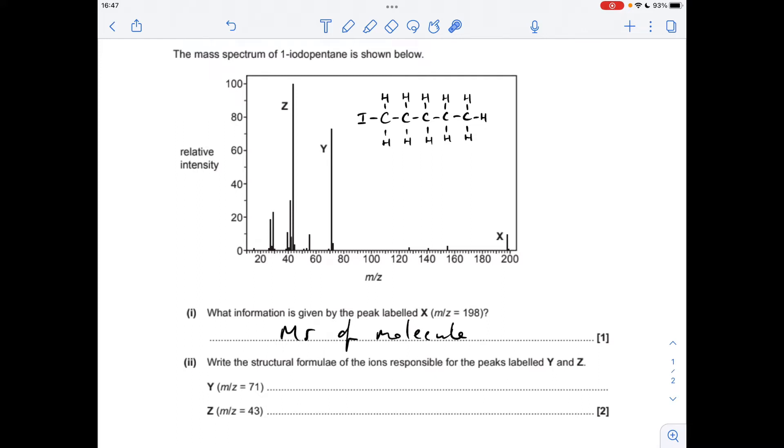Moving on to the next part, we've got to come up with a structural formula for the ions responsible for these two peaks, Y and Z. So we'll do Y first. If we think about the drop in mass to go from 198 to 71, that's a loss of 127, which equates to the loss of the iodine. So this bond must have broken, and this with a positive charge on must be responsible for the fragment peak at Y. So the structural formula for that looks like that, and whatever you do, don't forget that positive charge.